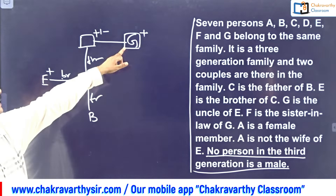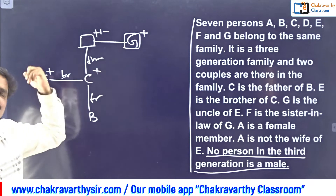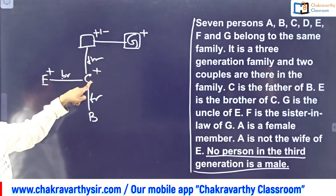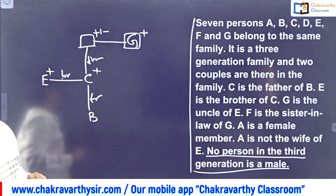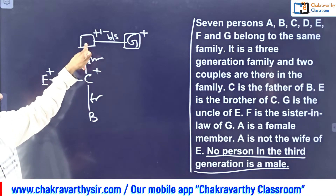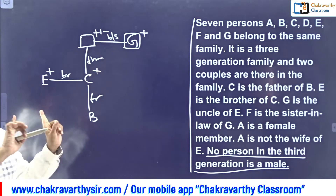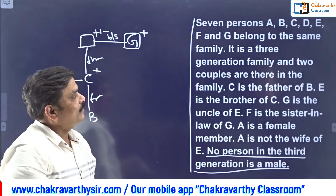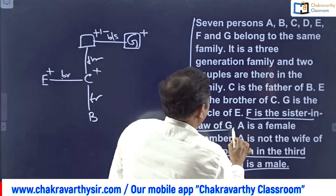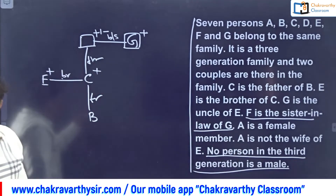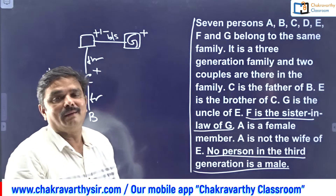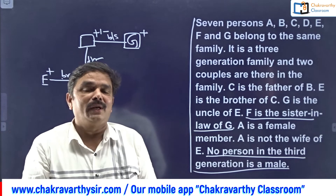Next: F is the sister-in-law of G. Some students get confused drawing the chart for sister-in-law. Who is your sister-in-law? If you are male, your wife's sister is your sister-in-law; if you are female, your husband's sister is your sister-in-law. Also, your brother's wife is your sister-in-law. Two ways: brother's wife is sister-in-law, or your spouse's sister is your sister-in-law.